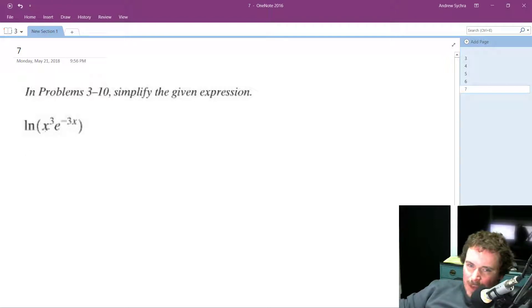So x raised to the third doesn't have the same properties that natural log of e raised to the negative three x will have. So what we'll do is we'll break this down to natural log of x raised to the third times natural log of e raised to the negative three x.